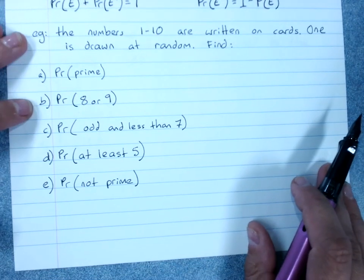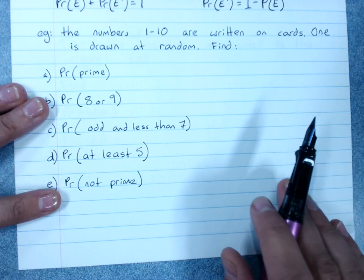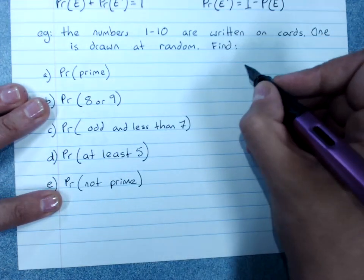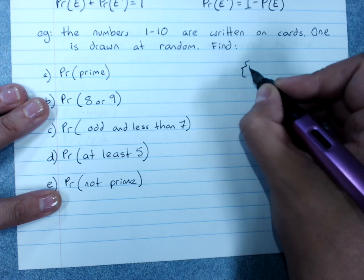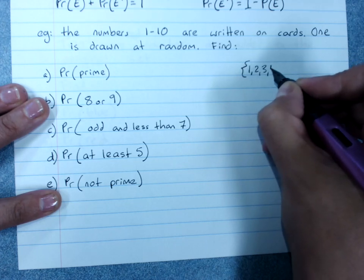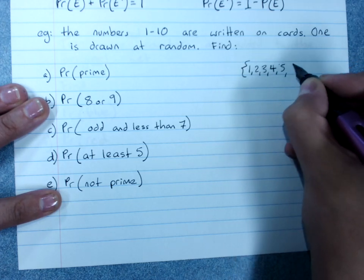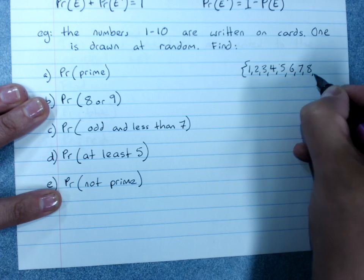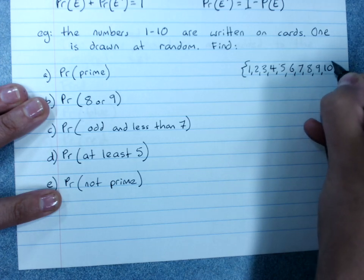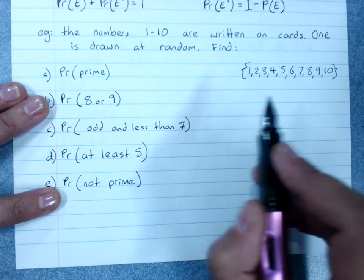So some examples. The numbers 1 to 10 are written on cards and 1 is drawn at random. Now if we needed to check our sample space, that's 1, 2... So that's our sample space.